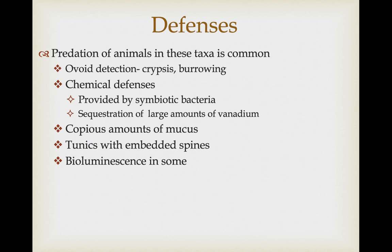Many organisms like to eat these animals, so threats of predation are extensive. One thing they can do is avoid detection through crypsis or burrowing, but they also have chemical defenses — this is where symbiotic bacteria come into play. Those that give the organism aposematic coloration are sequestering toxins associated with the bacteria and advertising this fact. For example, in some species there is sequestration of large amounts of vanadium, a toxic substance used in defense. Simply producing copious amounts of mucus also appears to deter some predation.